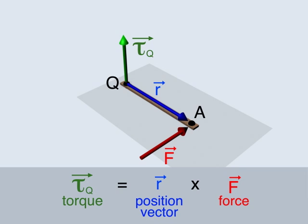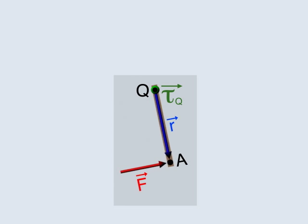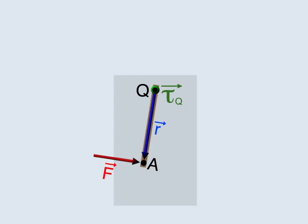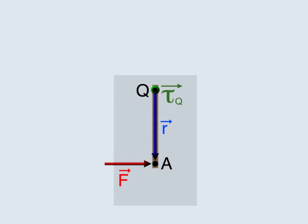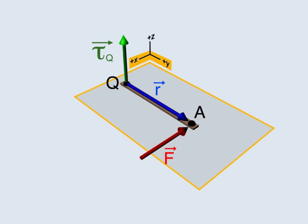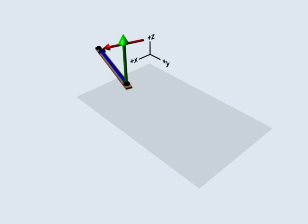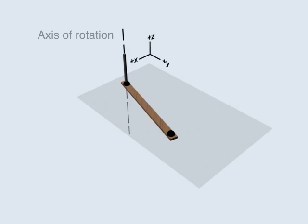The torque due to the force about point Q will cause the rod to rotate counterclockwise, as viewed from above. Because the force is contained in the XY plane, the rod will rotate on the XY plane, about the axis that passes through point Q, where the axle is.